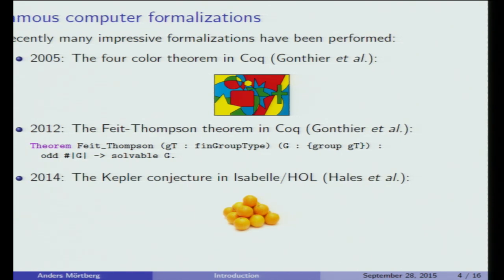Last year, a team led by Thomas Hales announced that they had formalized his proof of the Kepler conjecture, which talks about the optimal way of packing spheres — the way you'd expect if you stack oranges. This proof was also controversial for the same reason as the four-color theorem: he submitted it in 1998 as a 200-page paper proof plus three gigabytes of computer programs and data. Reviewers tried to verify it for multiple years and said they were 99% sure it was correct, so he spent about 10 years formalizing it.